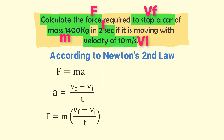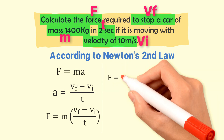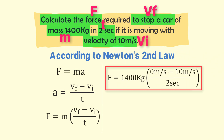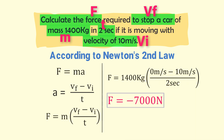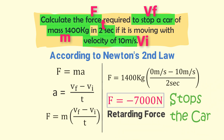Plugging in all values: F is equal to 1400 kg times (0 meters per second minus 10 meters per second) divided by 2 seconds. As a result, F is equal to minus 7000 newtons. The negative sign shows that this 7000-newton force is a retarding force — it stops the car.